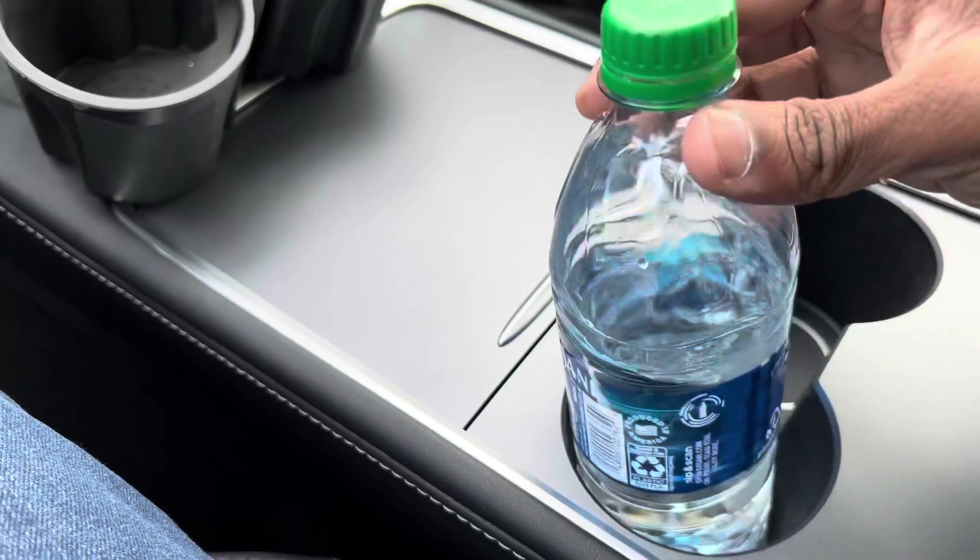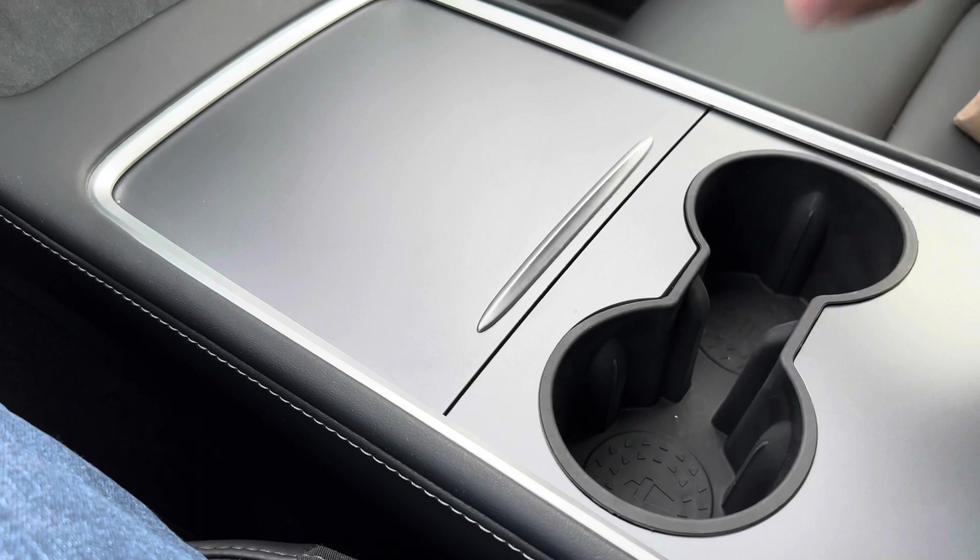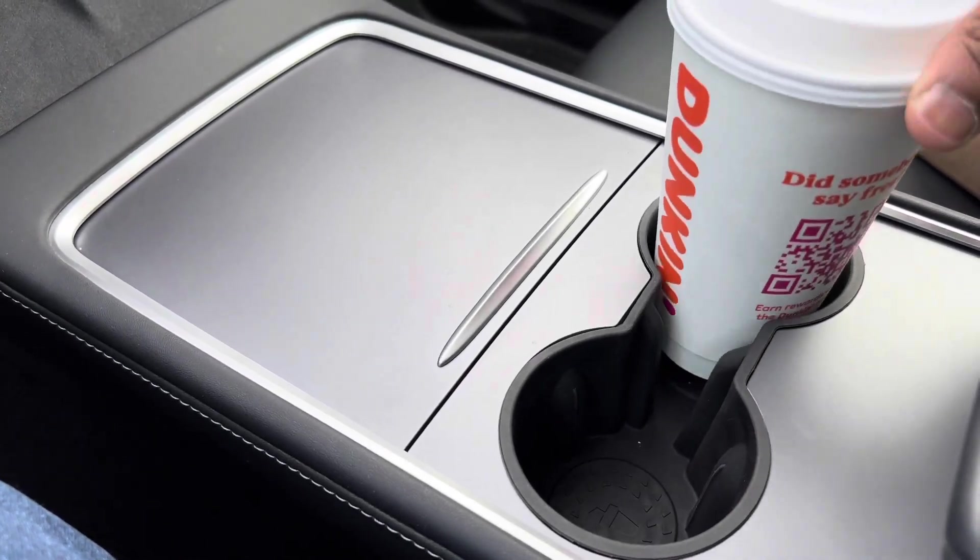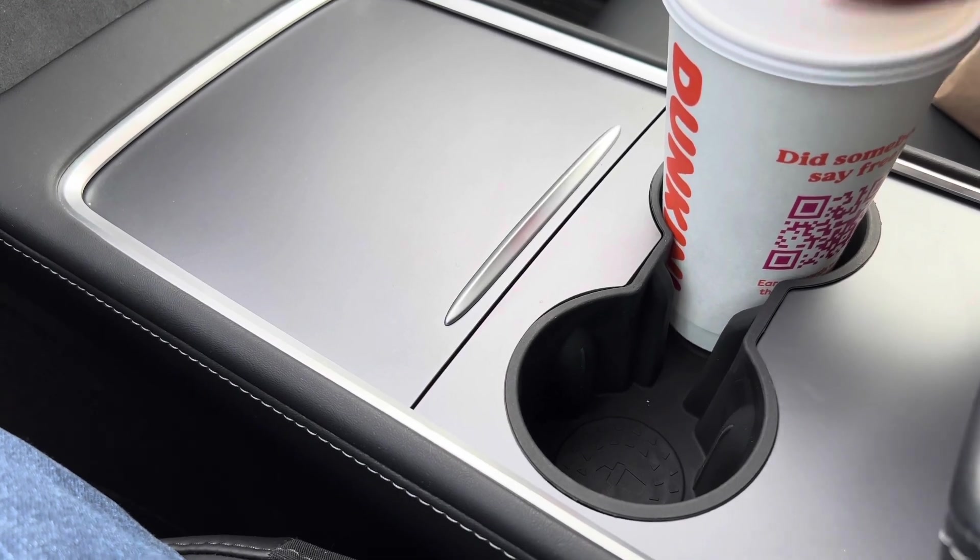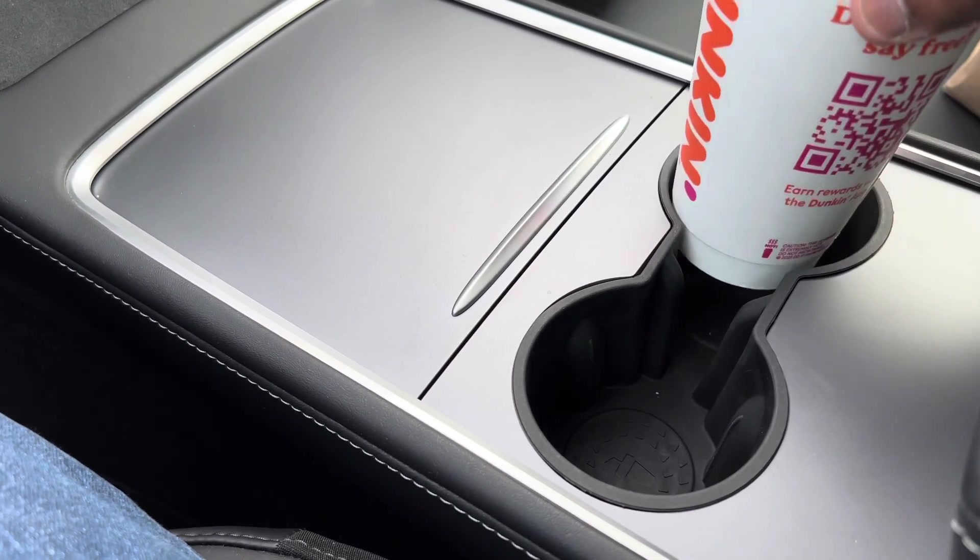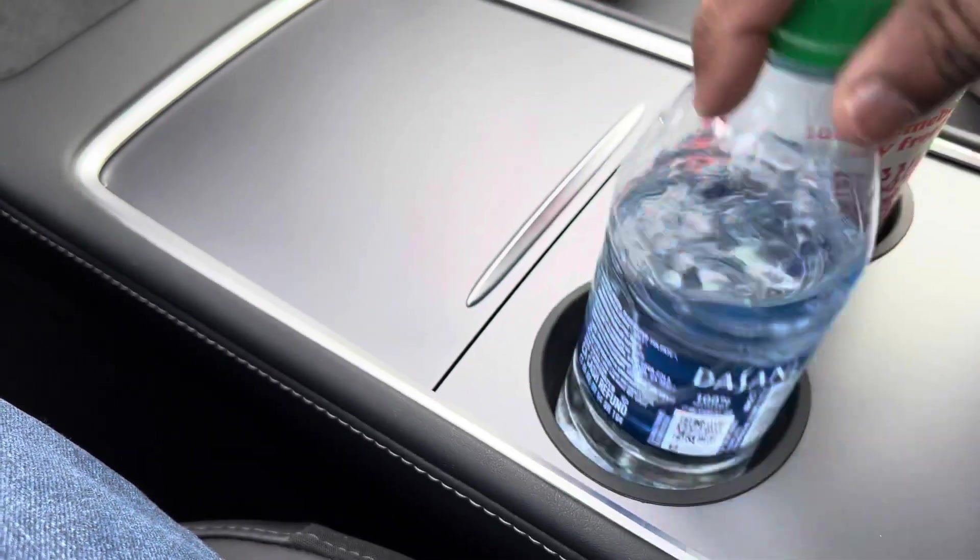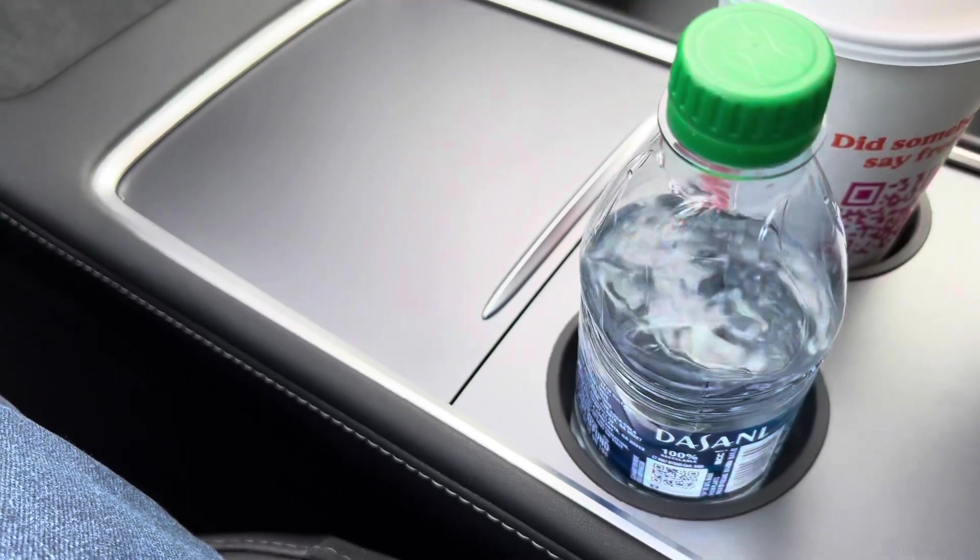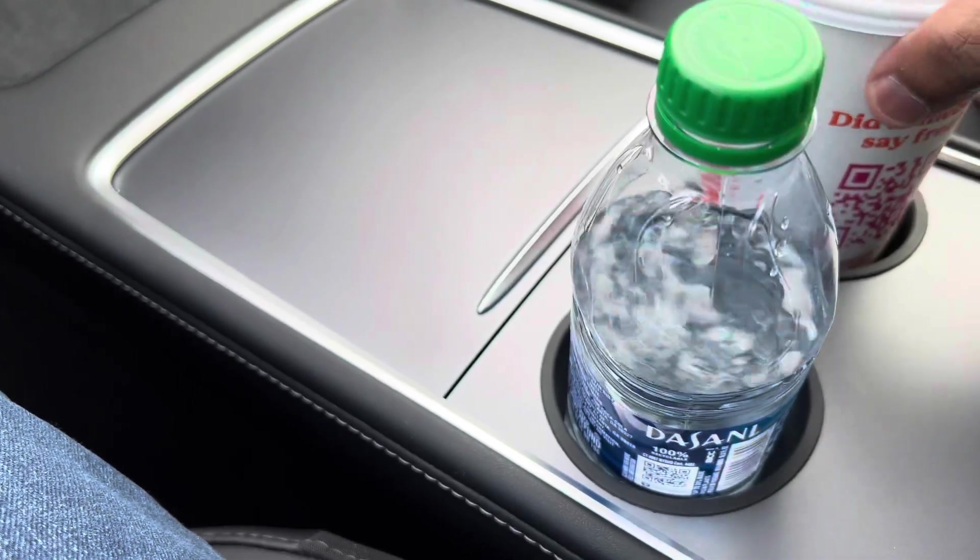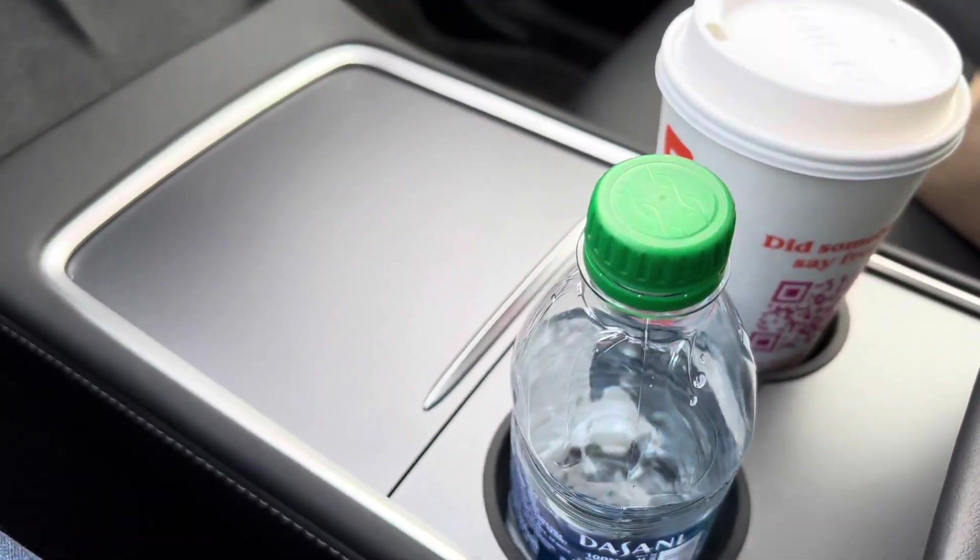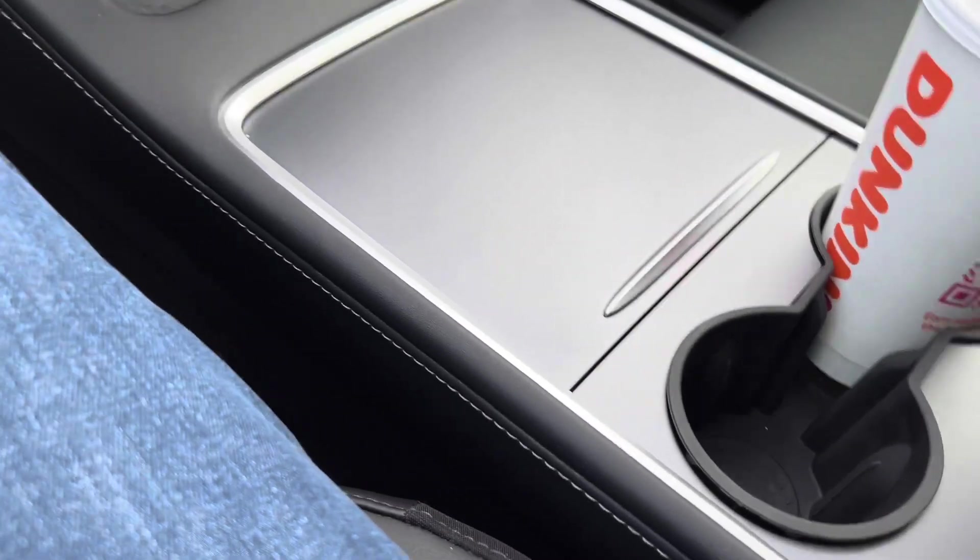So I'm gonna put the insert in here. It's pretty fitting. When I put the Dunkin Donut cup in, it's actually pretty tight. Also the bottle water - I mean it's smaller than the Dunkin Donut cup, so it fits and doesn't easily move. Same with the Dunkin Donut cup.